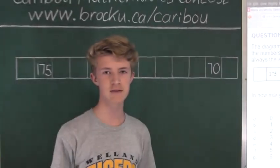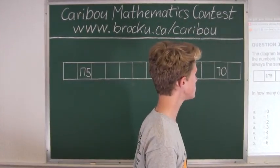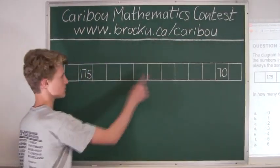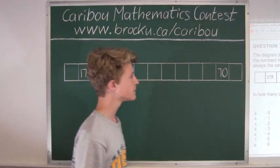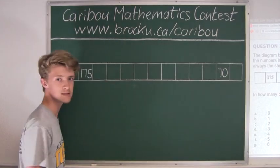So the question already gives us two conditions. The first condition is that the total of the numbers in the 13 boxes must be 2005, and the second condition is that the sum of any 3 consecutive boxes is always the same.